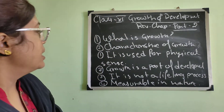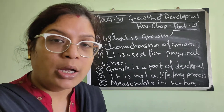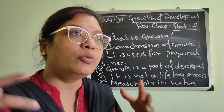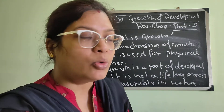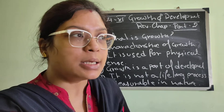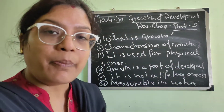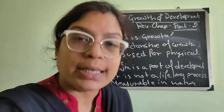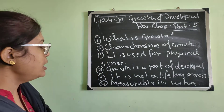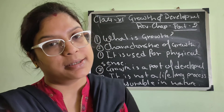To summarize: growth is always used in a physical sense because it concerns physical condition. Growth is a part of development — without proper growth, development is hampered, as seen in conditions like dwarfism. It is not a lifelong process, having a fixed stage after which it stops. And finally, it is always measurable. In the next video, we will discuss what is development and its characteristics. Thank you.